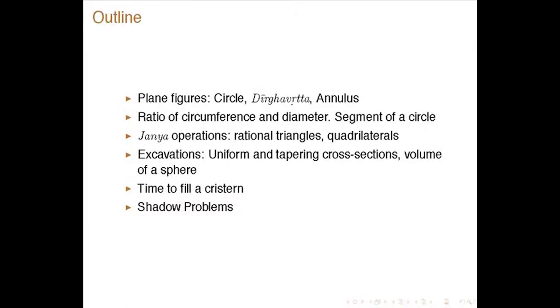The third part of these three lectures on Mahavira's Ganita Sara Sangraha will be on areas and volumes. The outline will first discuss plane figures — regular figures like circle, zirga vrutta, annulus — then results for circumference and diameter of a circle, segment of a circle. Then we talk about the so-called janya operations, rational triangles, quadrilaterals. Then regular volumes, uniform volume, tapering cross sections, volume of a sphere. Then time to fill a cistern, which is discussed for the first time by Mahavira, then shadow problems.